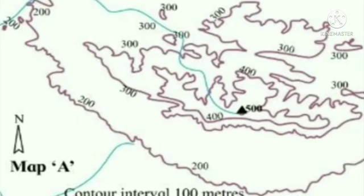In map A, the height of the land is being shown by contour lines.